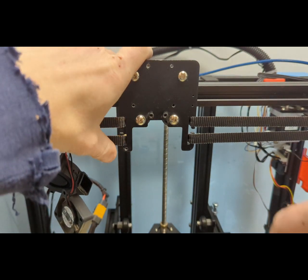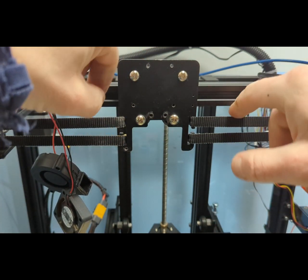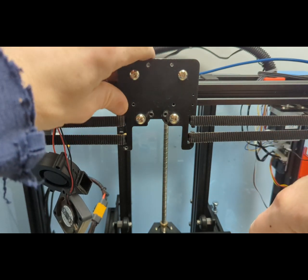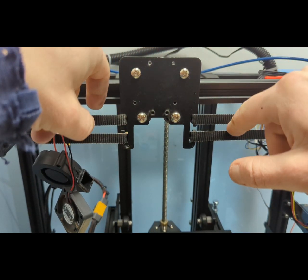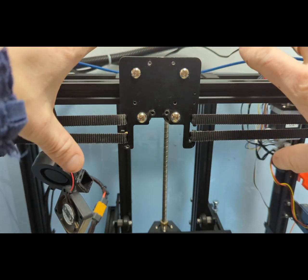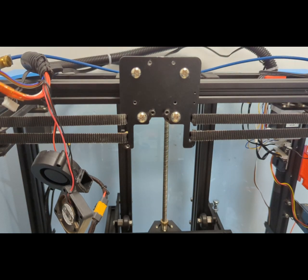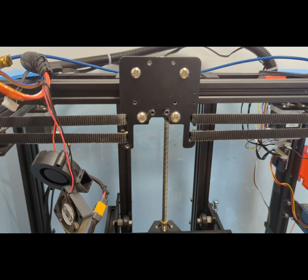Again, just tighten everything up. Make sure your belts, if you center your plate, you can get a pretty good feel, an even distribution of tension across the two sides. So I'm going to go through and put all these pieces back on and go from there.